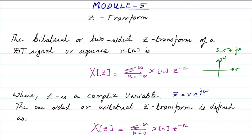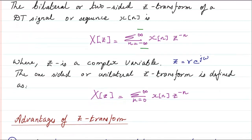This was for the two-sided or bilateral Z transform, where n goes from −∞ to +∞. When we talk about a unilateral or one-sided Z transform, we define it from n = 0 all the way up to infinity. The basic difference is that the bilateral transform covers the entire n-axis, both negative and positive, whereas the unilateral transform covers only the positive axis — the causal part — from 0 to infinity.